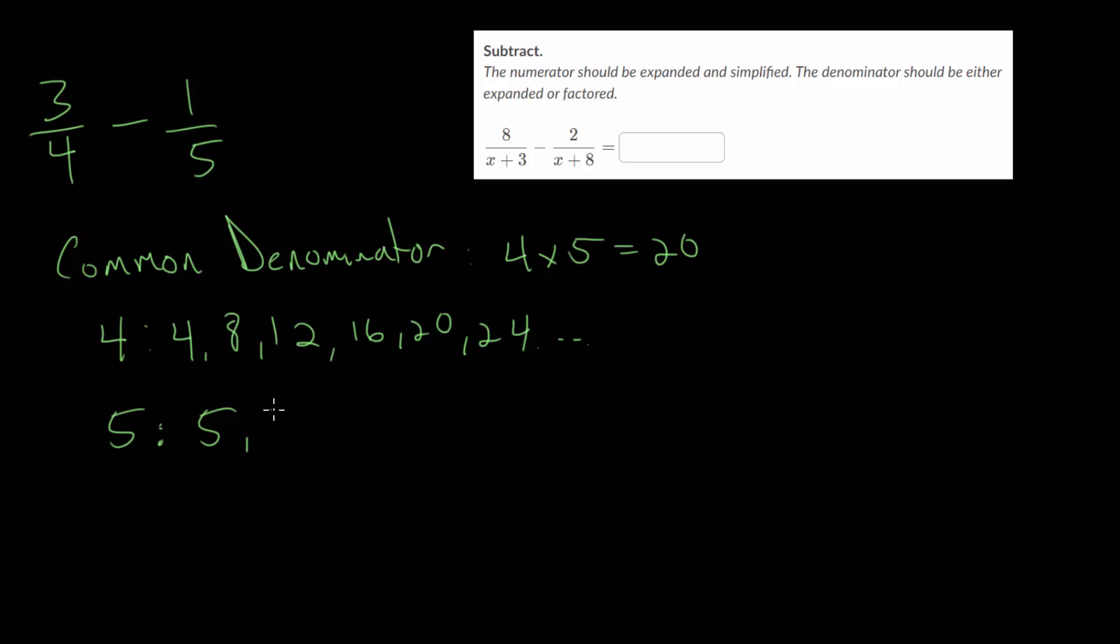And for 5 we look at 5, 10, 15, 20, 25, and so on. And we want their least common multiple between the two. So in this case, 20, since it is the least that are common between these.